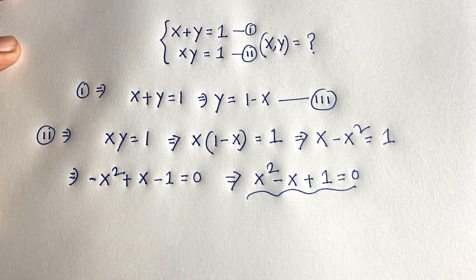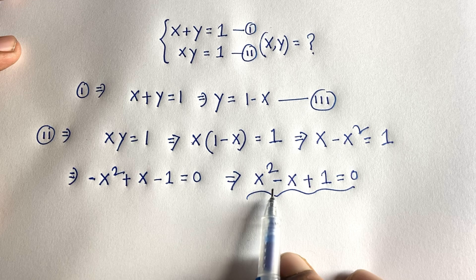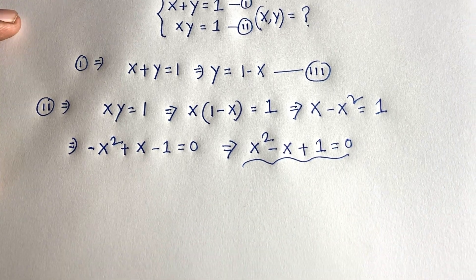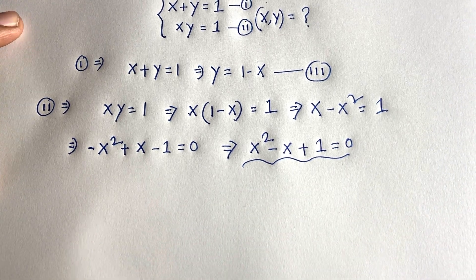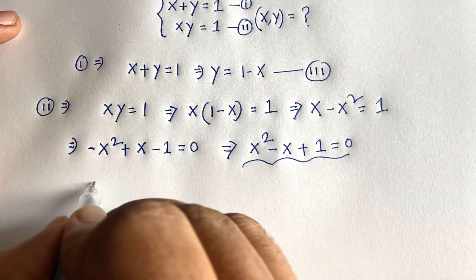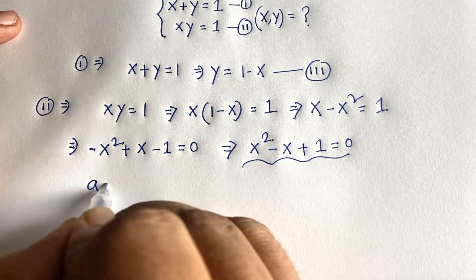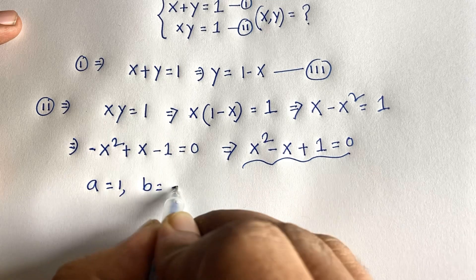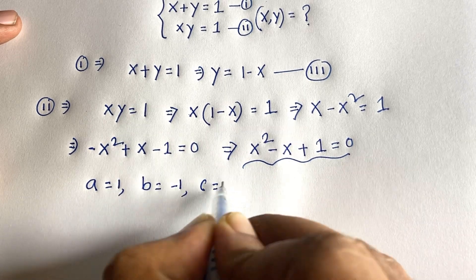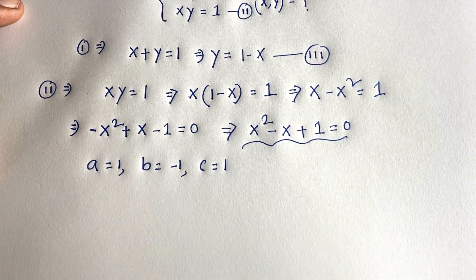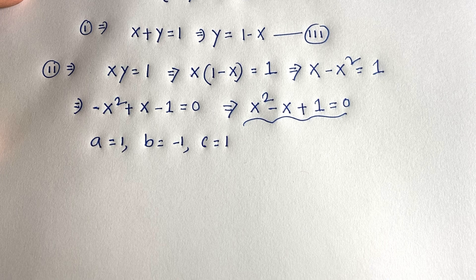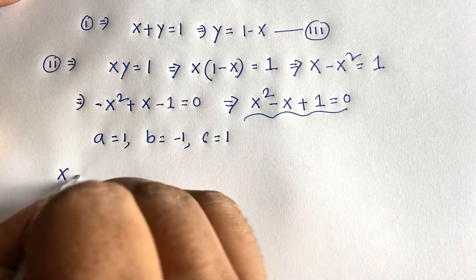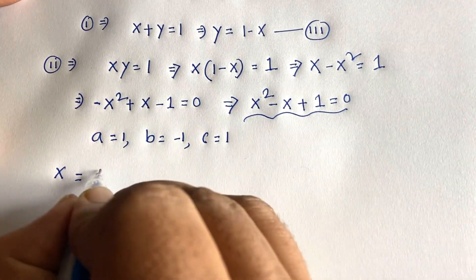We'll solve this quadratic equation to find the value of x. Identifying the coefficients: a is equal to 1, b is equal to minus 1, and c is equal to 1.